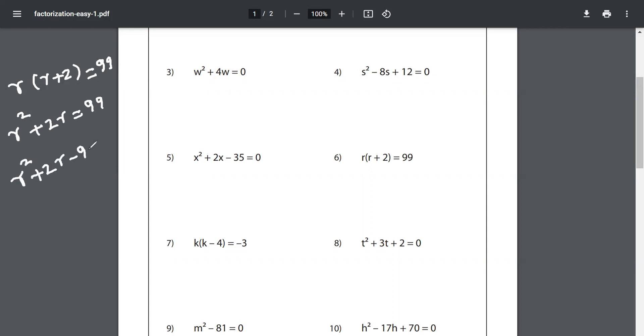Now get me two numbers: when multiplied gives me 99, and when added gives me only 2.